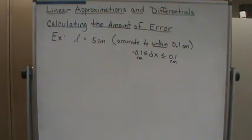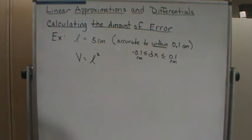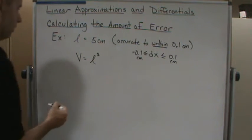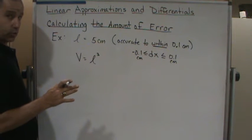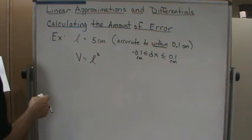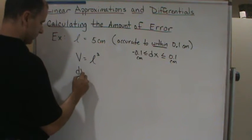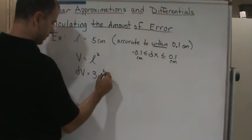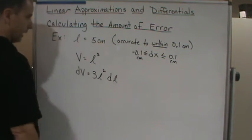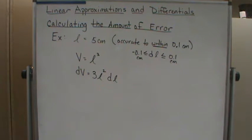The volume of a cube is given by the formula V = L³, the length of a side cubed. This leads to the following equation using differentials: dV = 3L² dL. Since I'm using L as my variable, I'll write dL rather than dx.